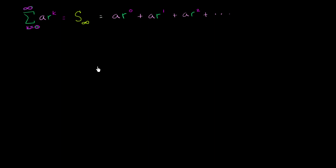Now, just like when we tried to derive a formula for the sum of a finite geometric series, we just asked: what happens if you take this sum and multiply every term by your common ratio r? The reason I said this is 'proofy' is it's not always clear — when you're multiplying something times an infinite sum, this will at least give you the general idea.